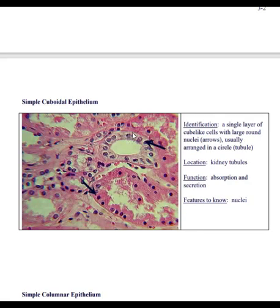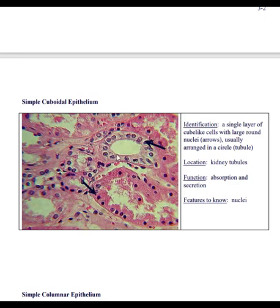Cuboidal cells are square or cube-shaped and almost always appear in a single file. We're looking at the simple, one-layered variety, and this example is from the kidney tubules. Anywhere you're going to be absorbing or secreting, you'll probably find these cuboidal cells arranged around an opening called a lumen. Sweat glands also have them — so anything that squirts, absorbs, or secretes: think simple cuboidal epithelial cells. Their function is to absorb and secrete. The nucleus is almost perfectly round, not smashed like in squamous cells.